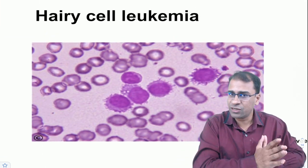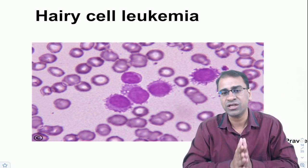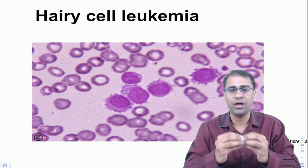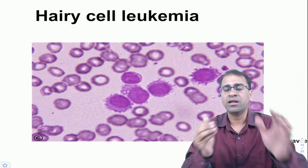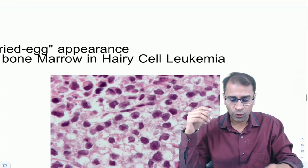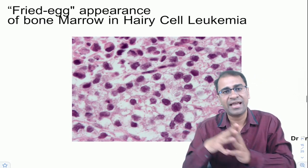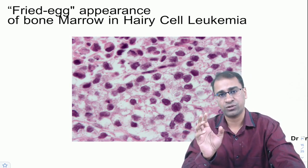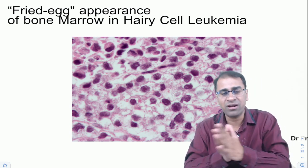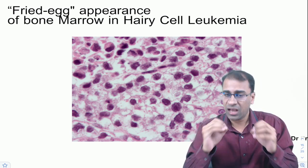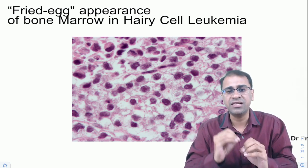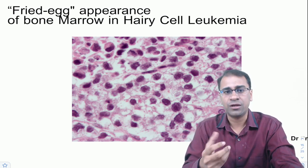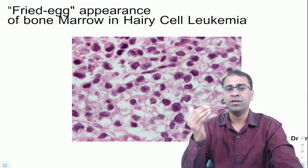Hairy cell leukemia shows characteristic hairy cells on peripheral smear — the cytoplasmic projections contain Golgi bodies and ribosomal complexes, best seen on phase contrast microscopy. The key mutation is BRAF V600E. Bone marrow shows a fried egg appearance. Patients show pancytopenia with monocytopenia (not monocytosis). Staining is positive for Annexin A1, DBA.44, and TRAP. The characteristic CD marker is CD103. Being BRAF positive, treatment includes the BRAF inhibitor vemurafenib.